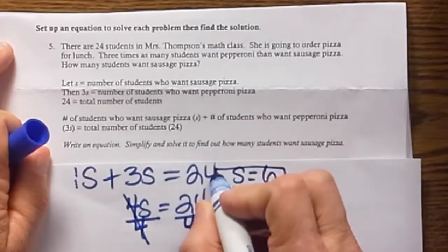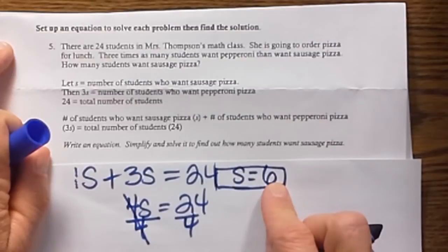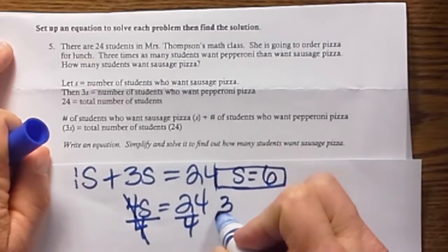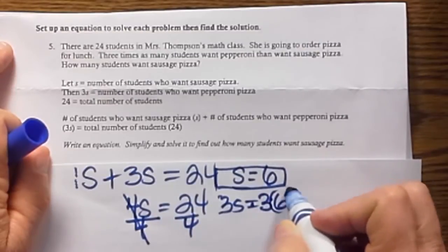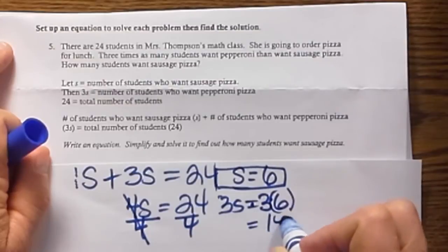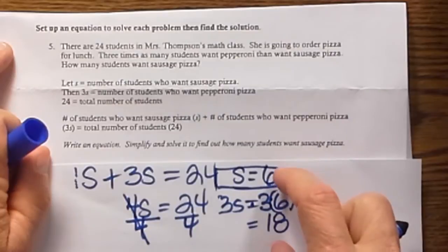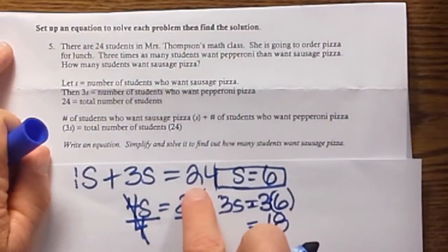So that means 6 students want sausage pizza. So 3S, that's going to be 3 times 6. That's 18. So 18 students want pepperoni. So you can add them together and check. 6 plus 18 is 24. So that's correct.